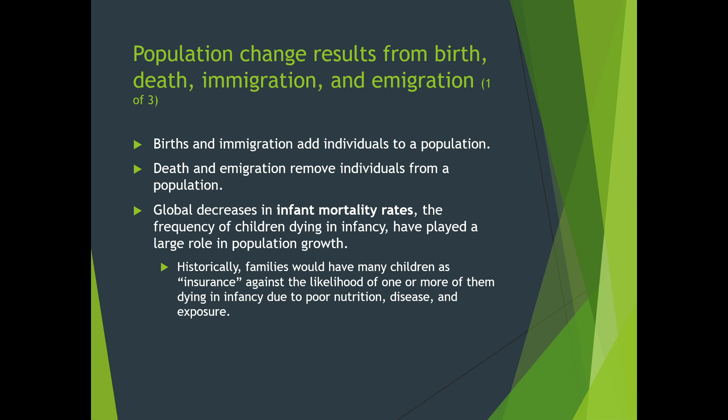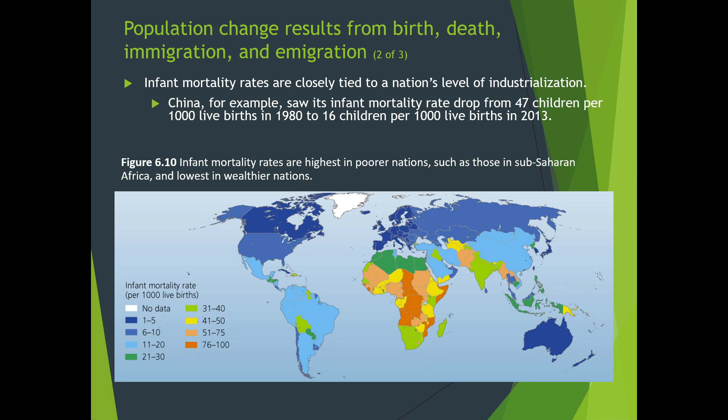During little-house-on-the-prairie times and earlier, we didn't have good nutrition and disease prevention to help pregnant women deliver healthy babies. A lot of times those babies did not make it, so women would have five, six, or seven children but only two or three would survive. There were also pronatal pressures — carrying on the family name and all that.